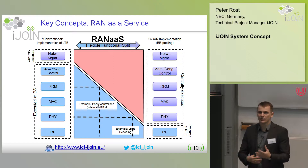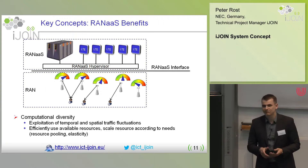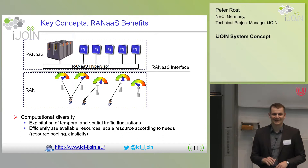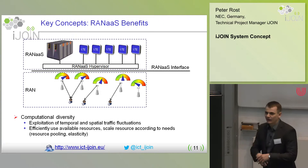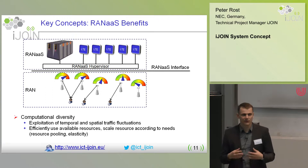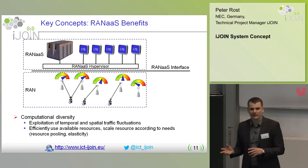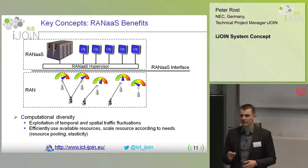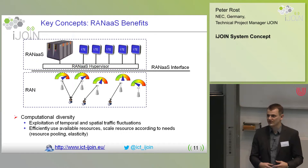The benefits of RAN as a service are manifold. The probably most apparent one is computational diversity. Assuming you have a thousand small cells, the likelihood that all of them are fully loaded at the very same time is almost nil. In reality, at any point in time only 10 to 20% of your small cells are highly occupied, while the rest are in almost idle mode. There is no reason to have full resources provisioned for those unloaded small cells.